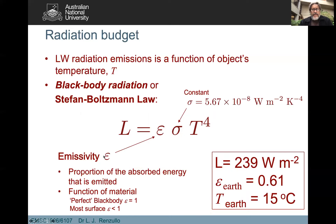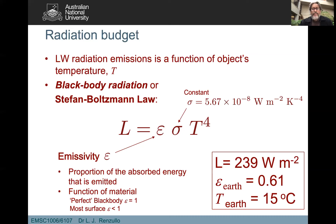Emissivity is the ability for an object to emit what it has absorbed. A perfect blackbody will emit everything it absorbs. Most objects on Earth are not perfect blackbodies, so they emit less than 100 percent of what they absorb. This emissivity epsilon is a value less than one for most objects on Earth. If you add up all the various land cover types, oceans, and clouds, on average the whole Earth has an emissivity of about 0.6.